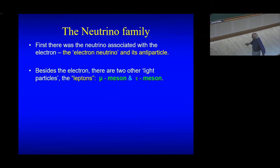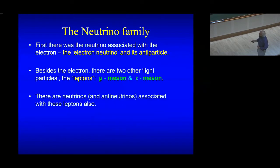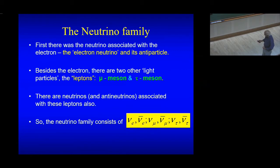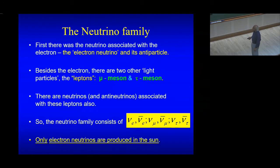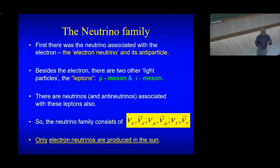Besides the electron, there are two other light particles — leptons — the mu meson, actually predicted by Homi Bhabha before its discovery, and then the tau meson. So there are three light particles today, and three neutrinos with corresponding anti-neutrinos: the electron neutrino and its anti-particle, the muon neutrino and its anti-particle, and the tau neutrino and its anti-particle — six particles total. But only electron neutrinos are produced in the sun, because they are produced in reactions where a proton or neutron decays. In our story today, we are talking only of electron neutrinos.